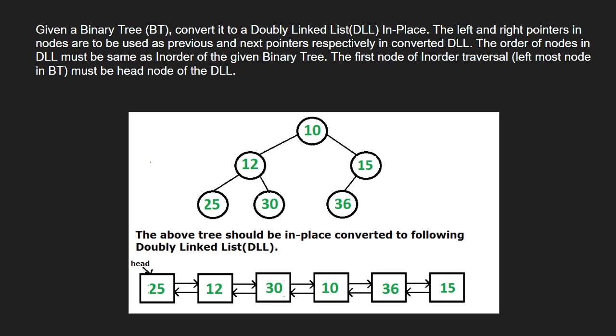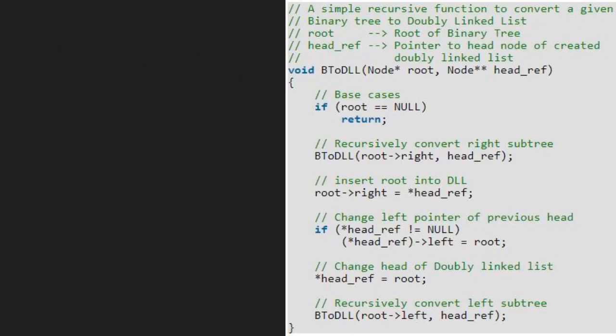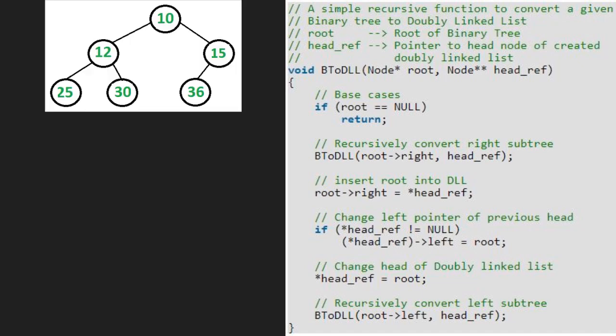Now let us have a look at the algorithm. Let us also have a sample tree to test our algorithm. We call the bt2dll function with the root node and headref, which we initially set to null.